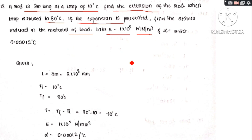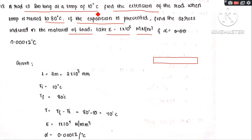Given data: a rod is 2 meters long at a temperature of 10 degrees Celsius. Find the extension of the rod when temperature is raised to 80 degrees Celsius. Length L is given as 2 meters. The initial temperature is 10 degrees Celsius raised to 80 degrees Celsius, so the temperature change will be determined and the change in extension will be found out.